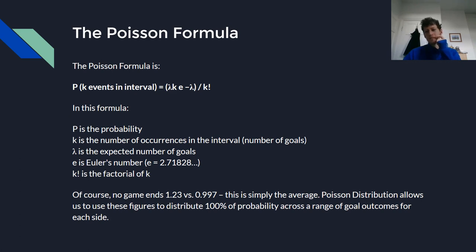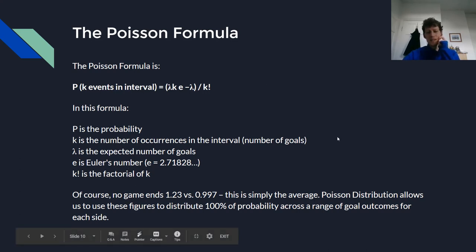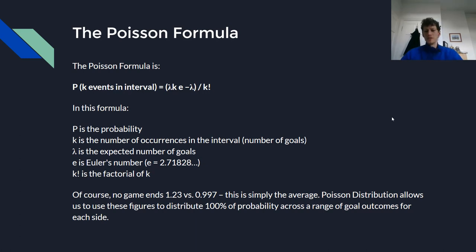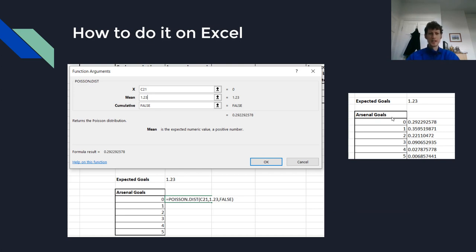So then we have all of the information we need to put into the Poisson formula, which you can see there with a little definition below. No game ends 1.23 to 0.997 — these are simply averages. Poisson distribution allows us to use these figures to distribute 100% of the probability across a range of goal outcomes for each side — so across Arsenal scoring 0, 1, 2, 3, 4 and 5 goals, and the same for Manchester United. We can do that in Excel, which is nice and easy.